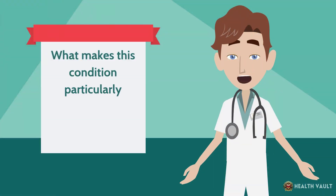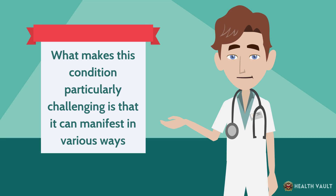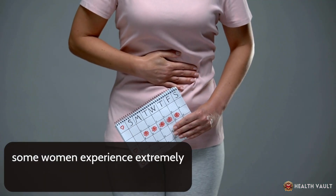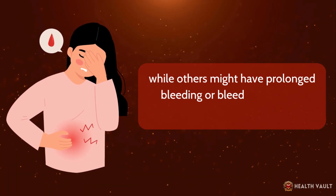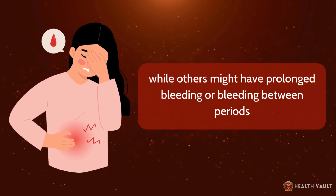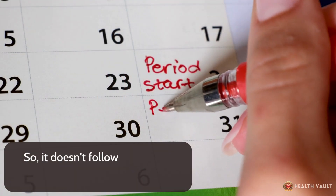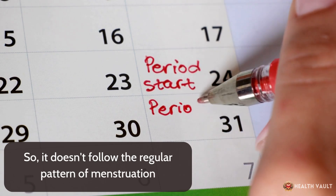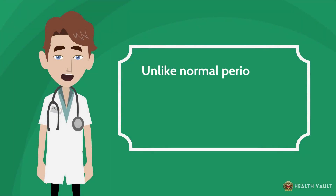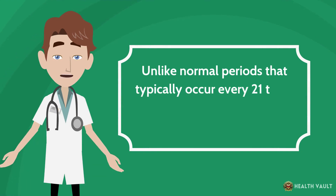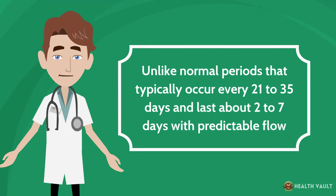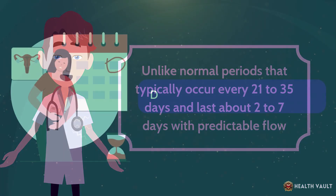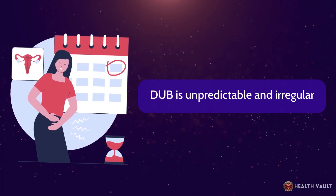What makes this condition particularly challenging is that it can manifest in various ways. Some women experience extremely heavy periods, while others might have prolonged bleeding or bleeding between periods. It doesn't follow the regular pattern of menstruation. Unlike normal periods that typically occur every 21-35 days and last about 2-7 days with predictable flow, DUB is unpredictable and irregular.